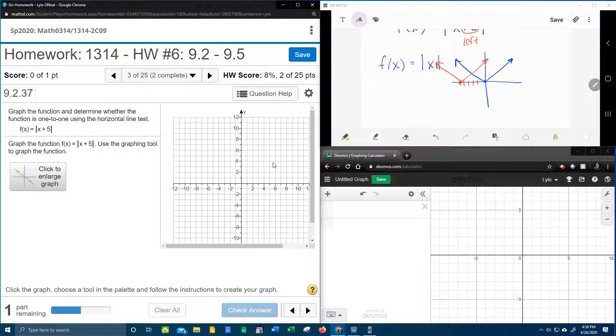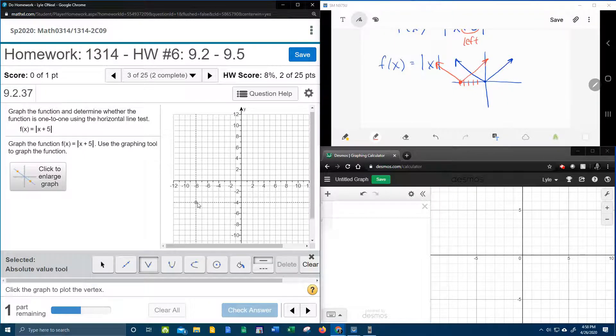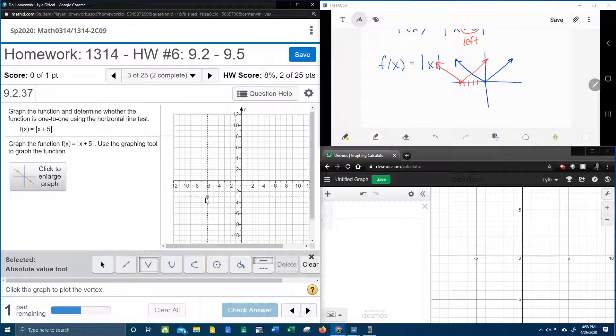So to graph that, we're going to pick the absolute value tool, and we're going to go to the vertex, which is at negative five. Click the graph to plot another point, and so I'm going to need another point.